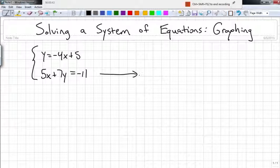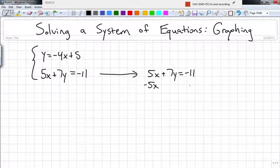So I'll just come out here. Again I want to solve for y, and if I subtract 5x from both sides, 7y equals negative 5x minus 11.